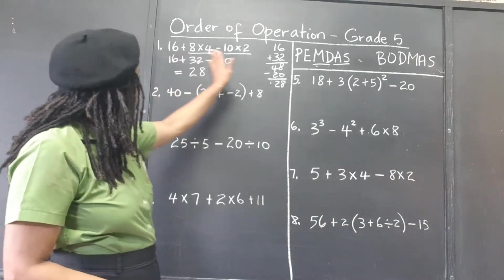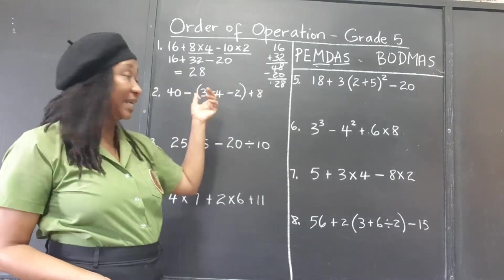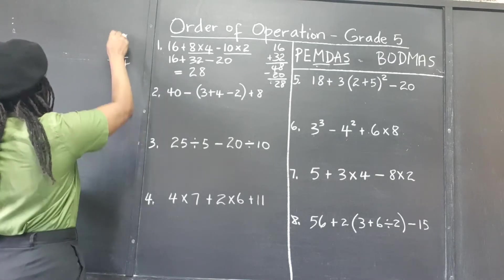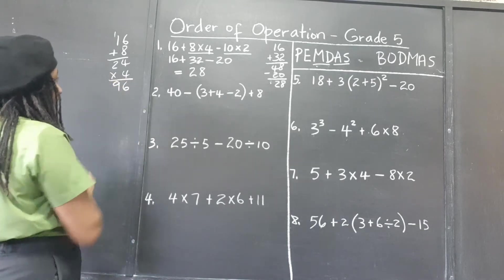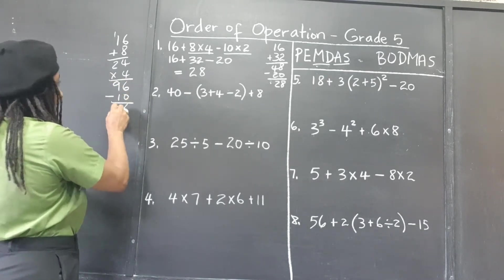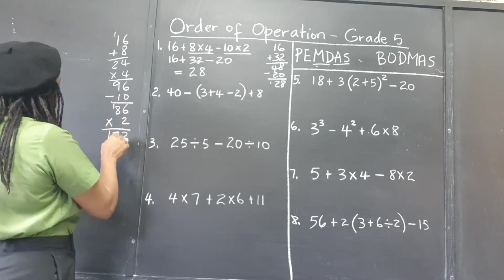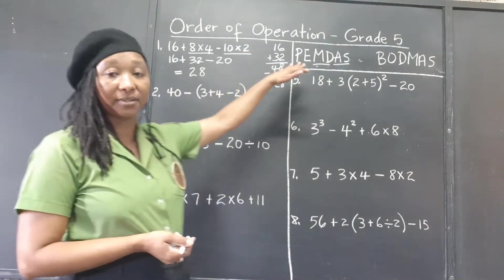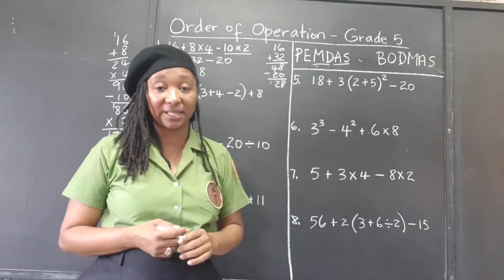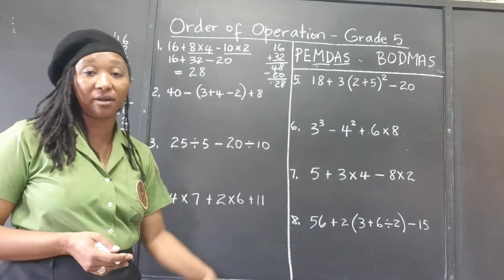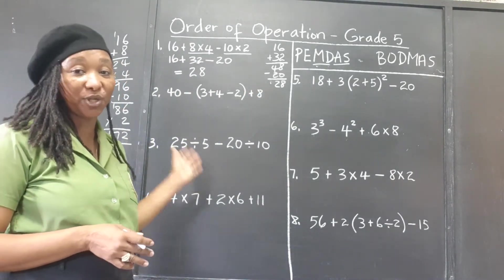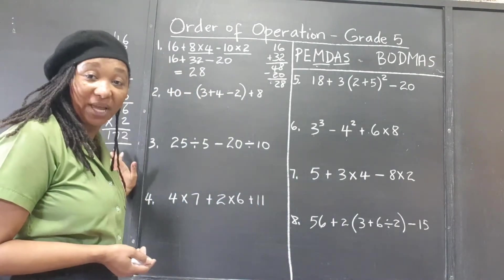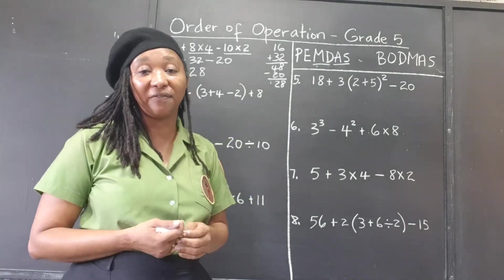Suppose we had just gone straight across the way it was presented — would we have gotten 28? 16 plus 8 is 24, times 4 is 96, take away 10 is 86, times 2 is 172. We would have gotten a completely different answer. We have to follow the rules. If you just go straight ahead ignoring the rules, you'll end up with an incorrect answer. In a multiple choice situation, that wrong answer would likely be there waiting for you.